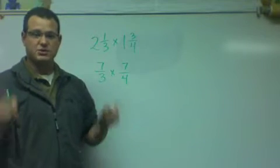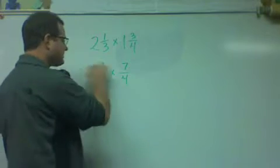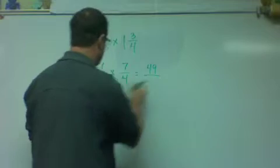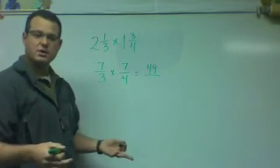And now we multiply our fractions, we multiply straight across. Seven times seven, forty-nine. Three times four, twelve.